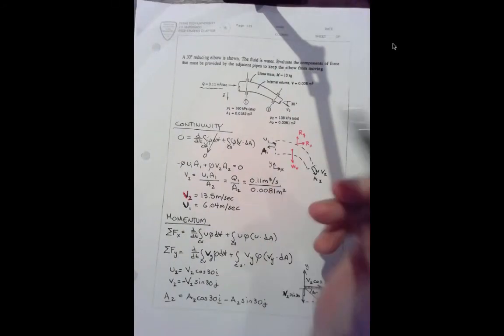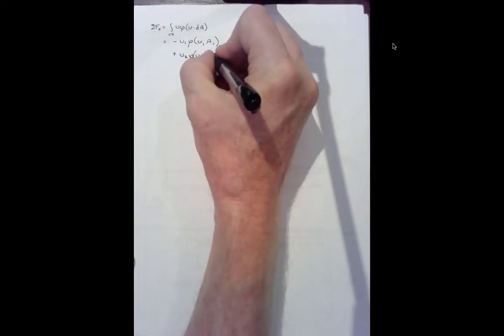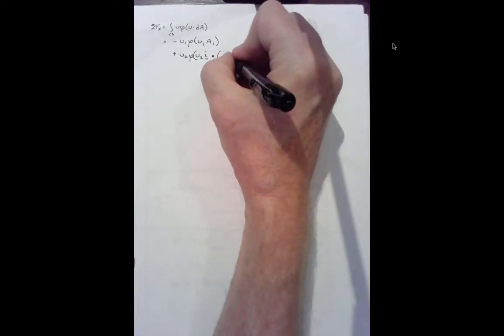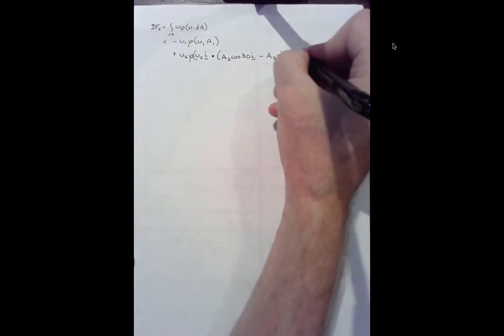So for the x direction, sum of the forces in x equals control surface u rho u dot dA which equals minus u1 rho u1 a1, that's this part, plus u2 rho u2 i dot product a2 cosine 30 i minus a2 sine 30 j.